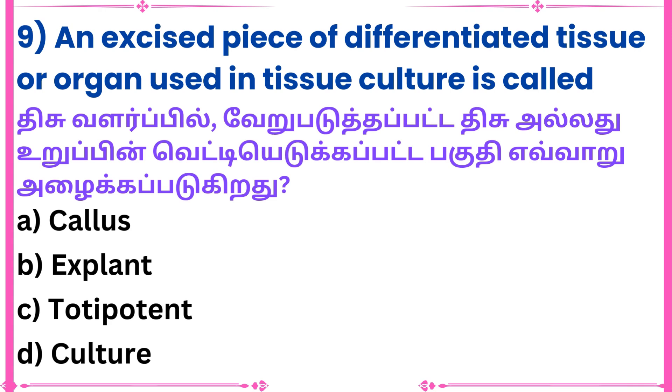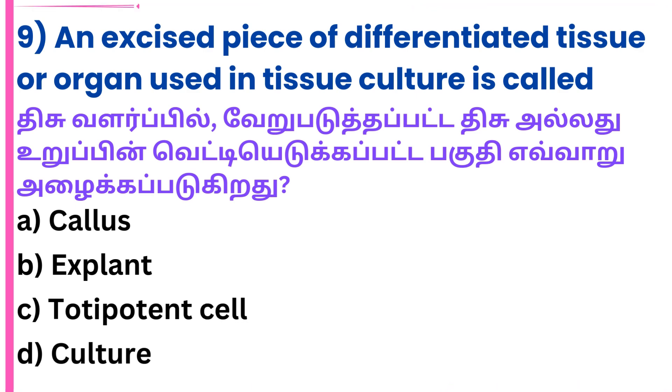Question 9: An excised piece of differentiated tissue or organ used in tissue culture is called what? This refers to a piece of tissue used in tissue culture.